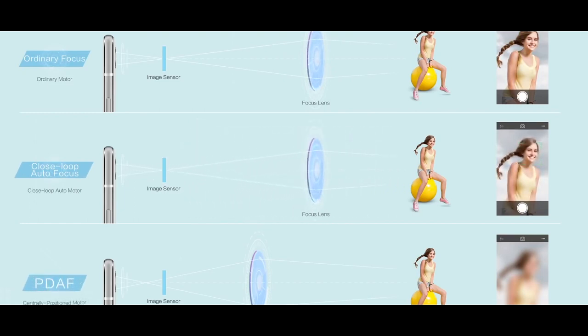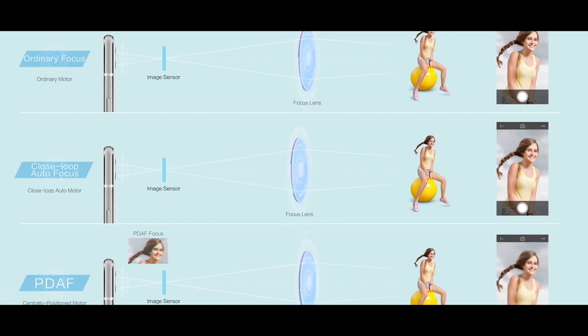In Phase Detection Autofocus, it calculates the phase difference of the subject and the imaging body and determines the position of the lens for a good focus, which makes it take less time. But it is not suitable for low light photography